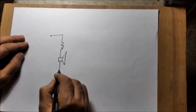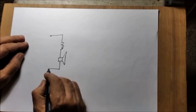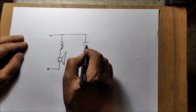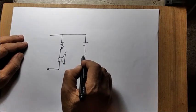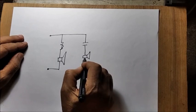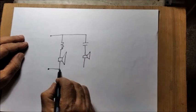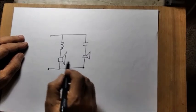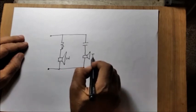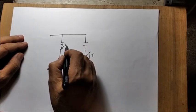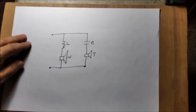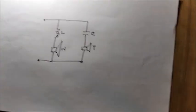For a first-order network, that is 6 dB per octave, only one item is used in each section, as shown in this figure. The inductor L passes the low frequency and blocks high frequency going to the woofer. Similarly, the capacitor C blocks low frequency and allows high frequency going to the tweeter.